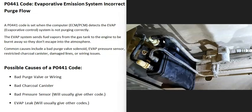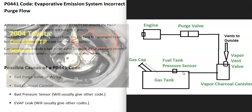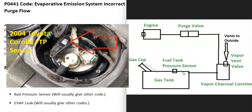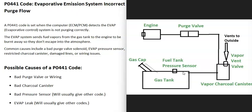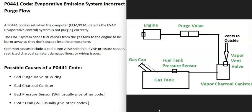Another possible cause is a bad pressure sensor. Located somewhere in the EVAP system is what's called a fuel tank pressure sensor, or sometimes just an EVAP pressure sensor. This is where the computer gets its information about what's going on inside the EVAP system. If there's a problem with it, it may send bad data to the computer, making it think there's a problem when there isn't. Usually if the pressure sensor is faulty you'll get other codes too — for example, a P0453 (evaporative emission system pressure sensor high) would be a good reason to test that sensor.